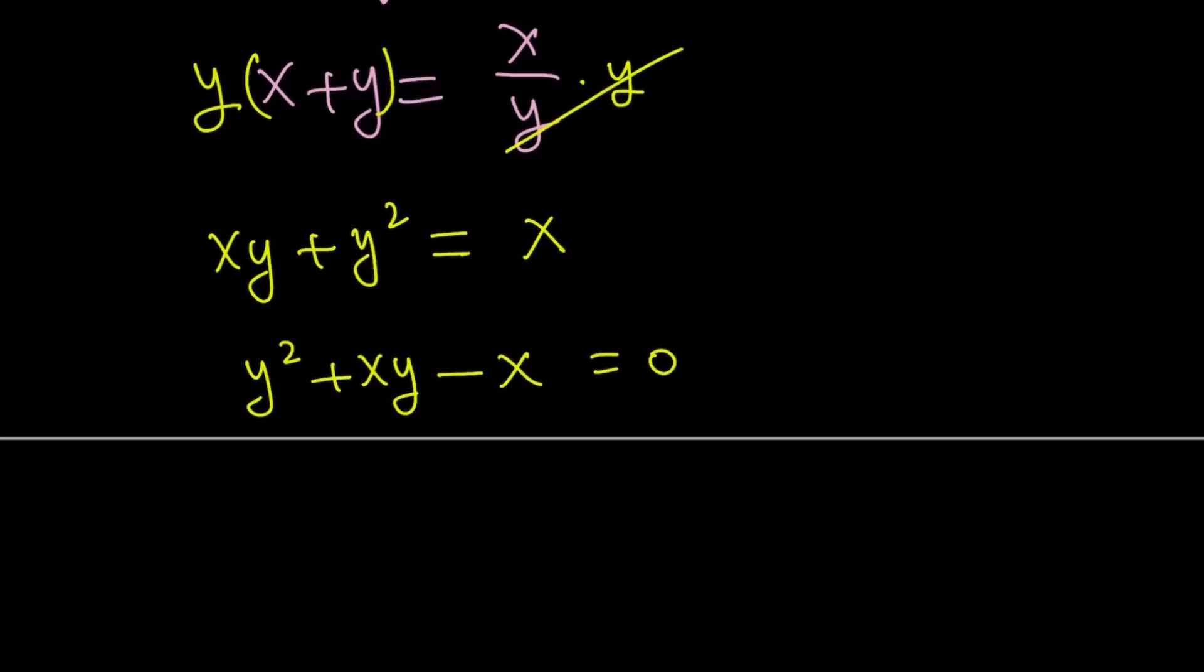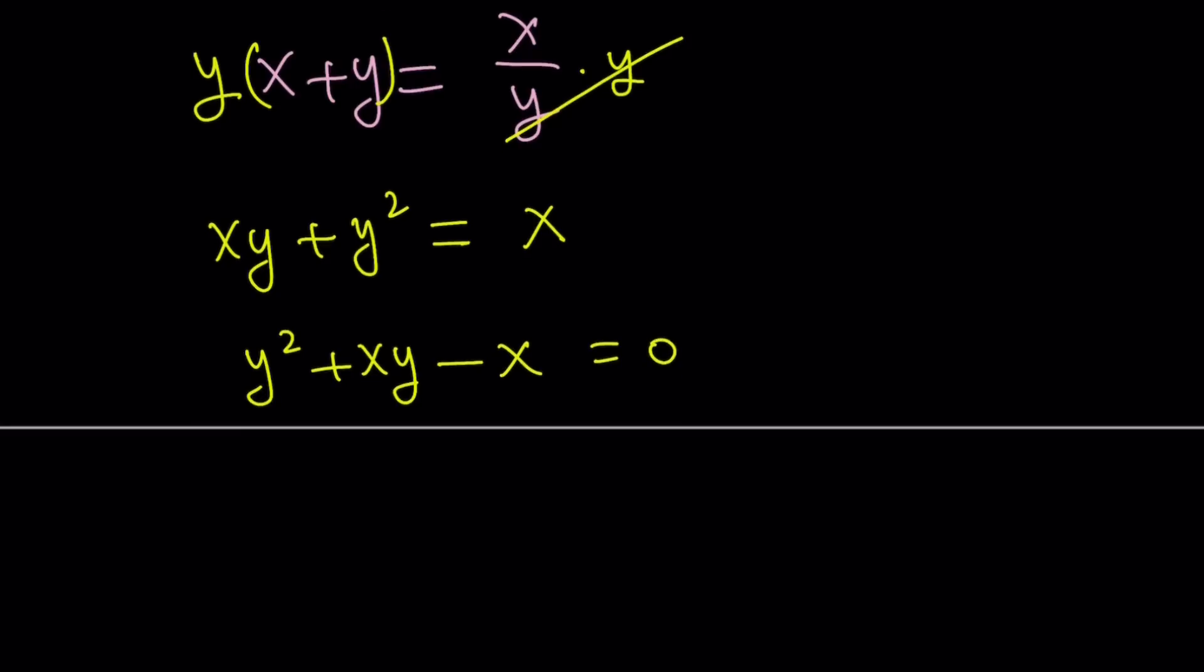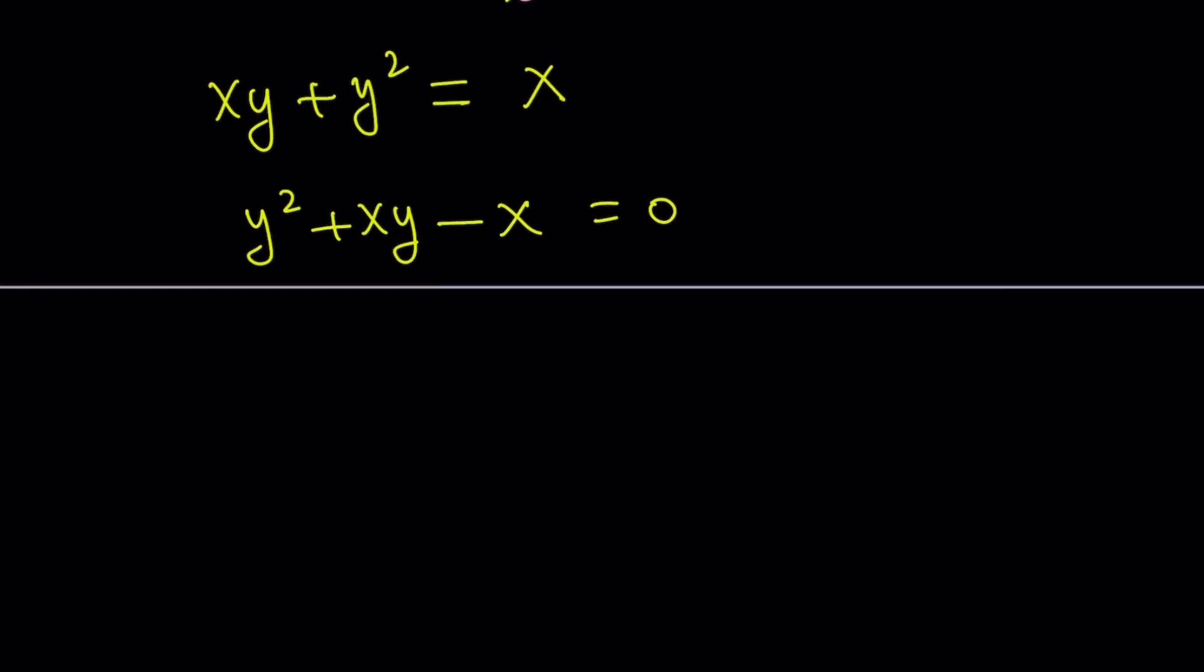And then we can solve this as a quadratic equation in y. And that's going to give us the following. Let me show you real quick. So as a quadratic in y, this can be written as y equals negative b plus minus the square root of b squared, which is x squared, minus 4ac, which is plus 4x, all over 2a.